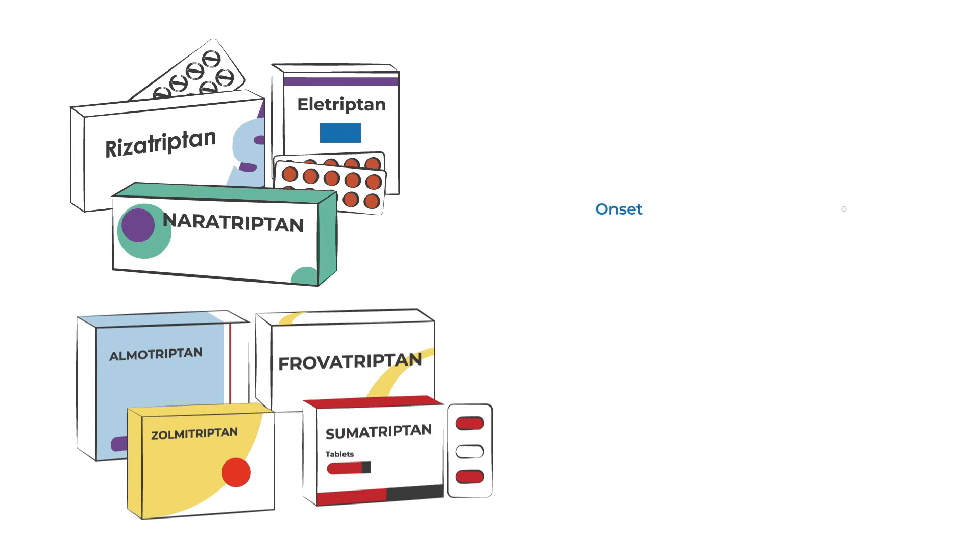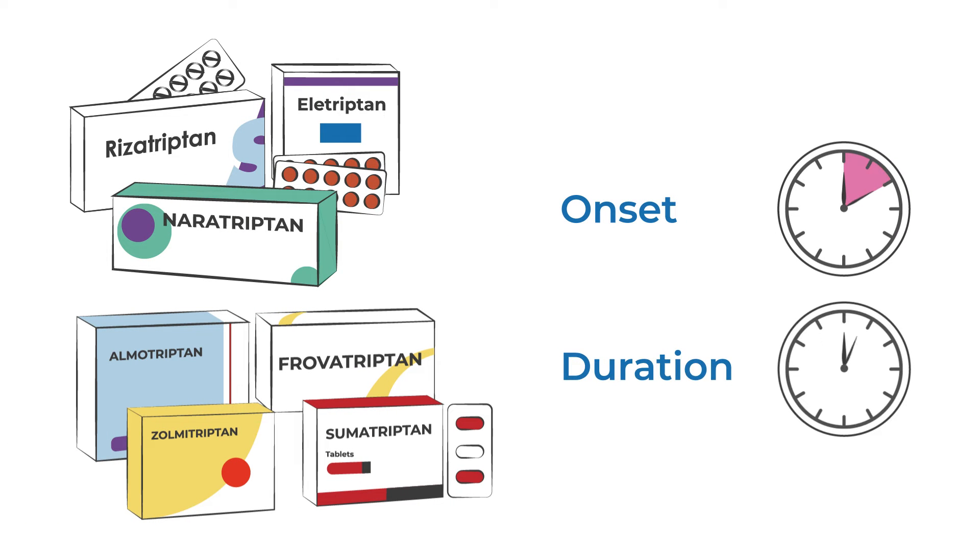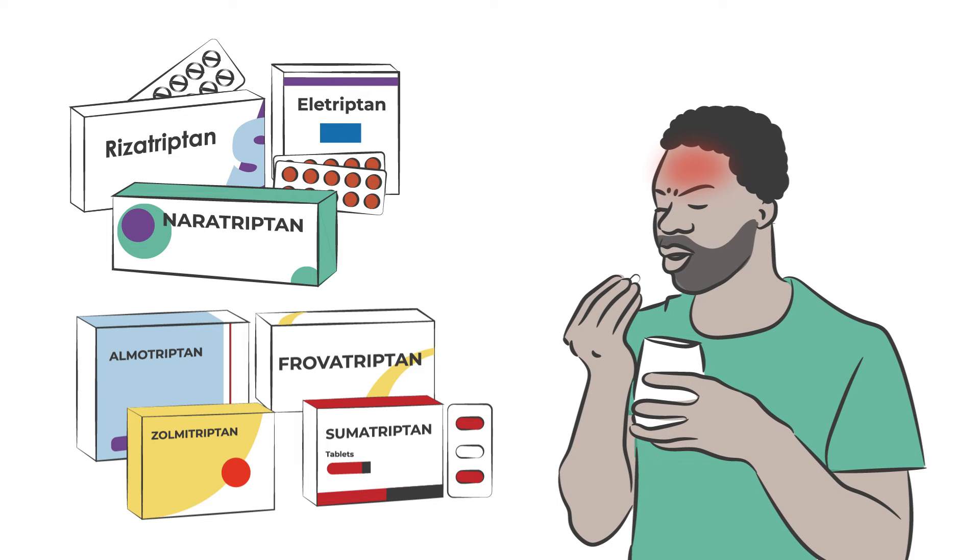The seven Triptans differ in their onset or how quickly they work and how long they last. But all are thought to be most effective when taken at the beginning of a migraine attack.